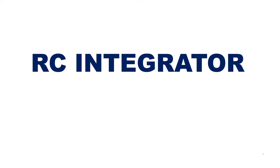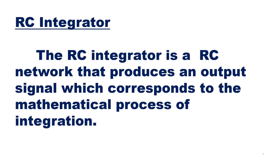The basic definition of RC integrator says that it is a circuit which performs mathematical integration. The RC integrator is an RC network — a resistance and a capacitance in series — that produces an output signal which corresponds to the mathematical process of integration. Because this circuit provides mathematical integration, it is called an integrator circuit, and since it is made up of only resistance and capacitance, it is called an RC integrator.